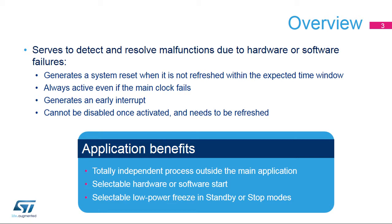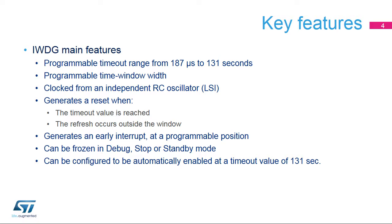One of the main benefits for applications is its ability to run independently from the main clock. The Independent Watchdog offers a wide range of timeout values, from 187 microseconds to 131 seconds. It is clocked by a 32 kHz RC oscillator, which cannot be disabled when the Independent Watchdog is enabled. It generates a reset when the programmed timeout value elapses, or when a watchdog refresh occurs outside a programmed time window. The IWDG also generates an early interrupt at a programmable position before the reset happens.